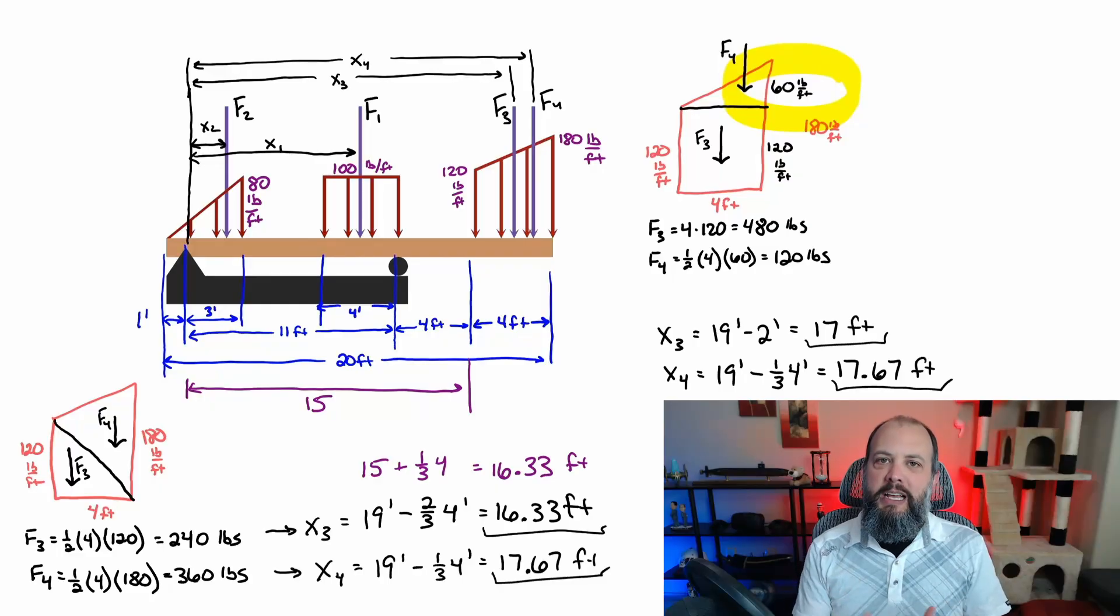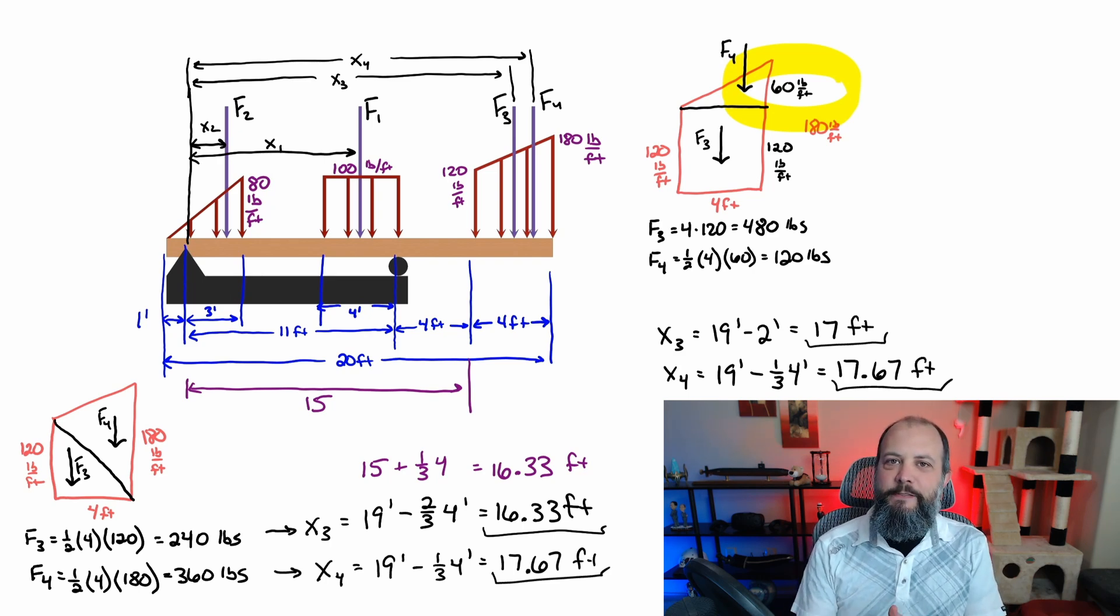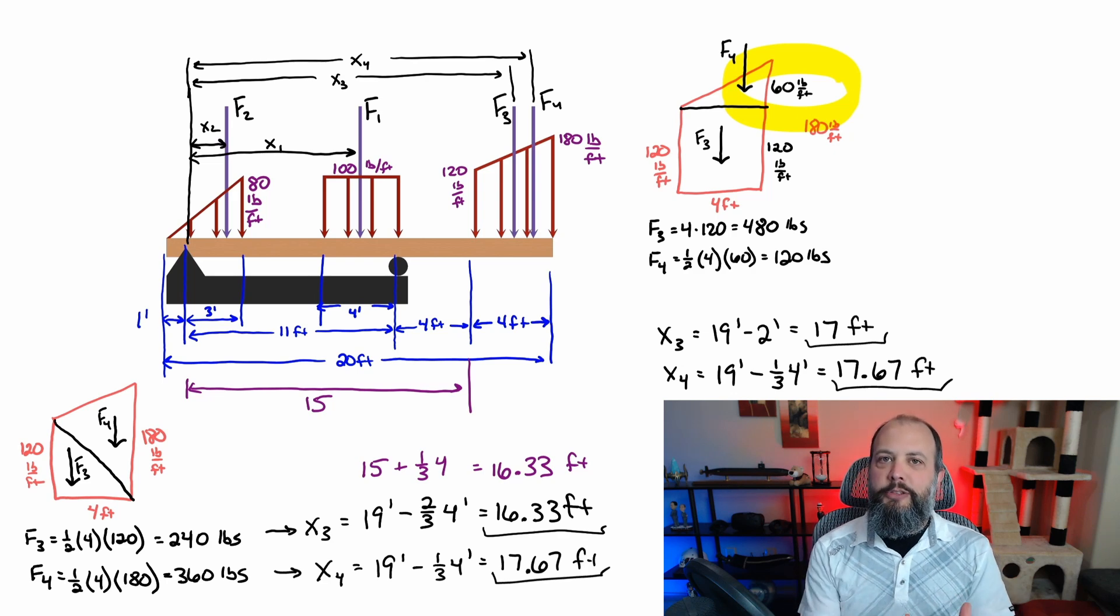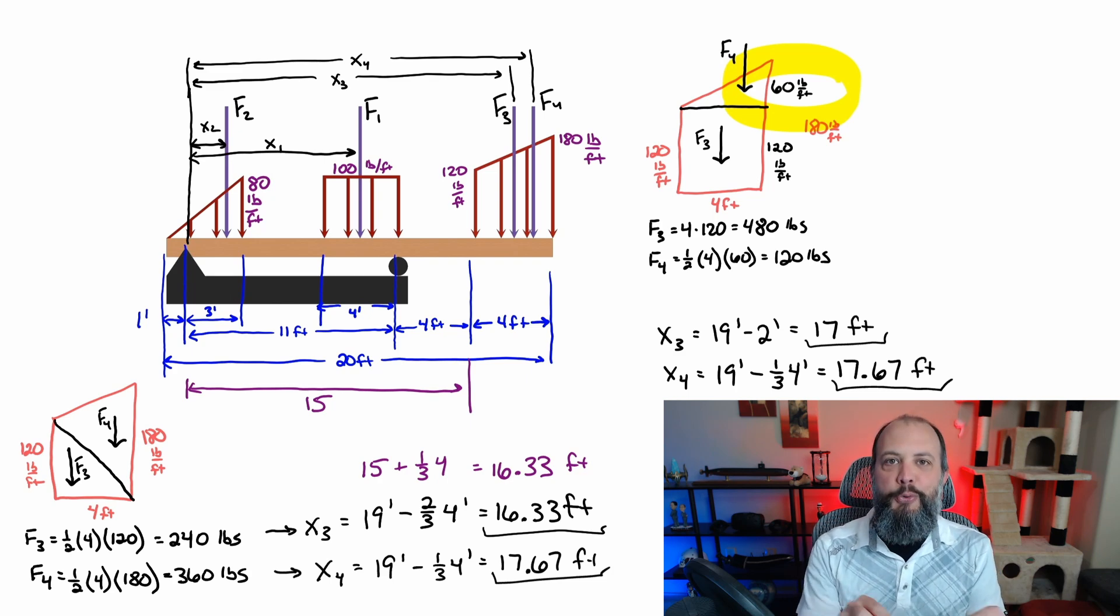But it's an extremely common mistake for students who use the rectangle-triangle method to use the total 180 feet as their height of the triangle. They forget to subtract the 120-foot rectangle from it. That's the best reason to use the two-triangles method. With the two-triangles method, the two numbers you're given at the left and right-hand side of your trapezoid, those are the two heights of each of your triangles. So there's no extra subtraction step.